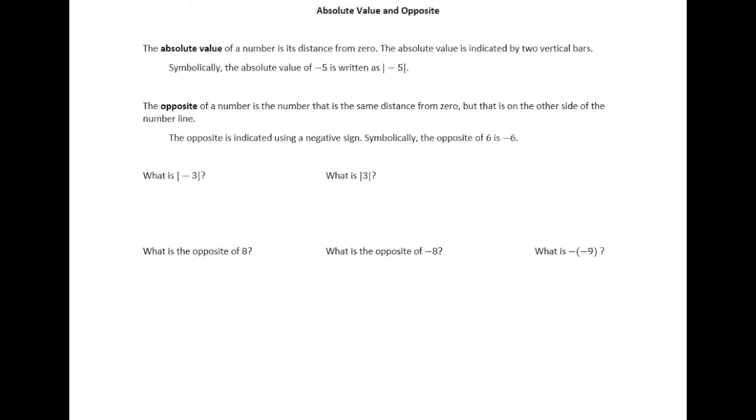In this lesson we're going to introduce two vocabulary terms that come up often when talking about integers. The first is the absolute value. The absolute value of a number is just its distance from zero. We're going to indicate the absolute value of a number by two vertical bars. So symbolically, the absolute value of negative 5 is written as negative 5 within these two vertical bars.